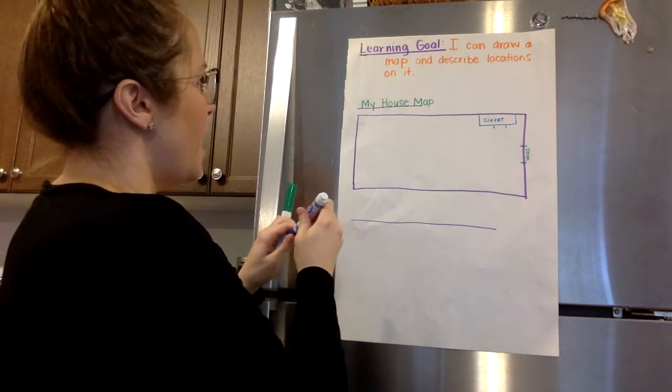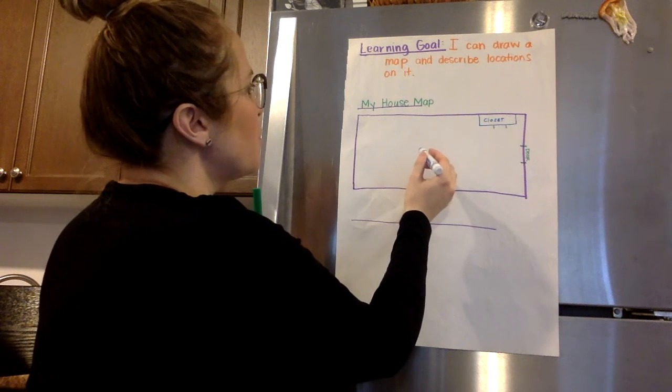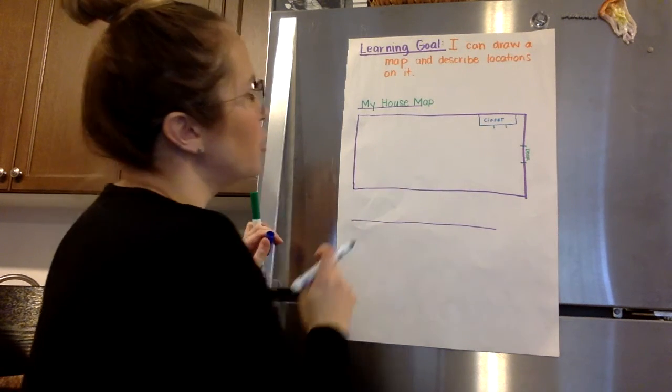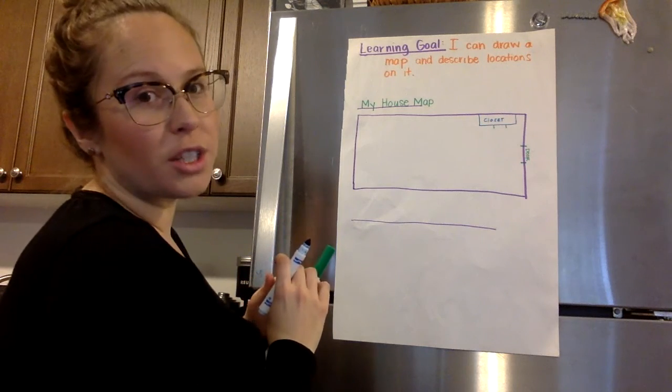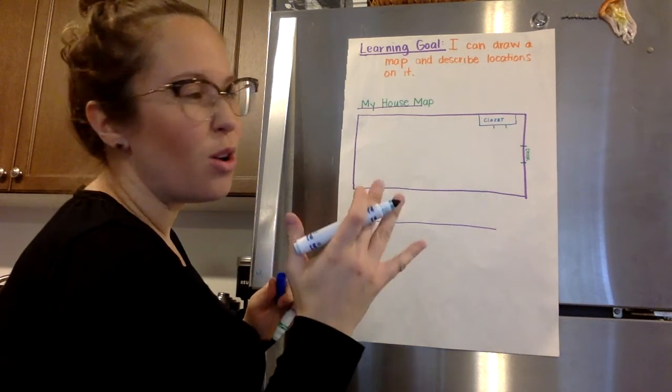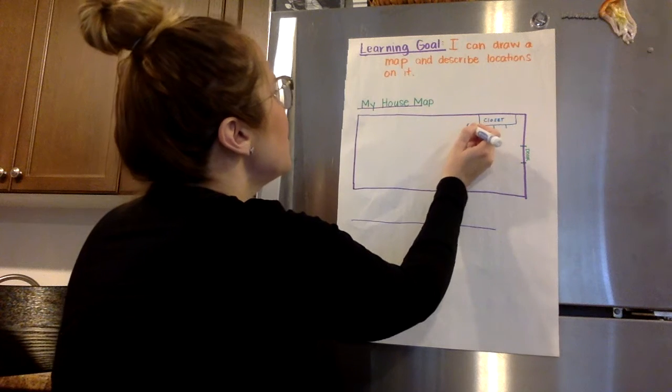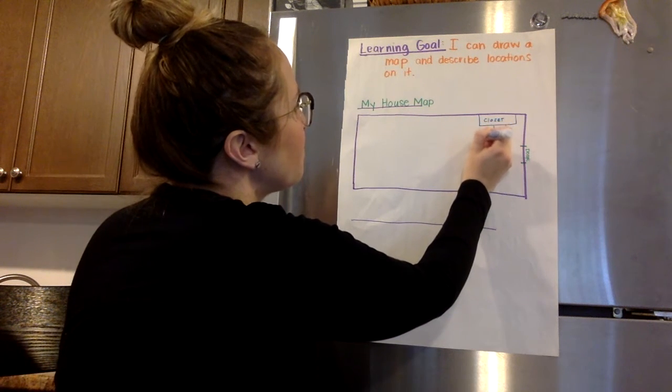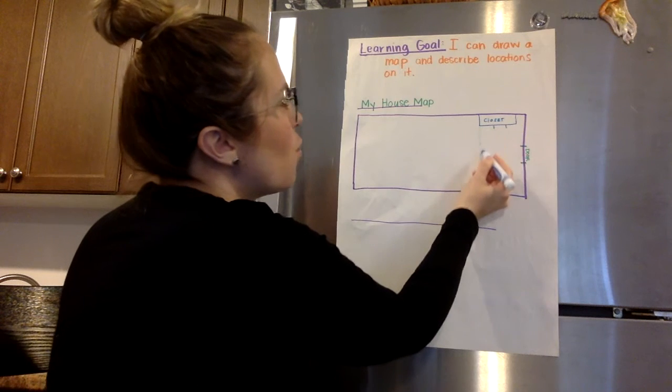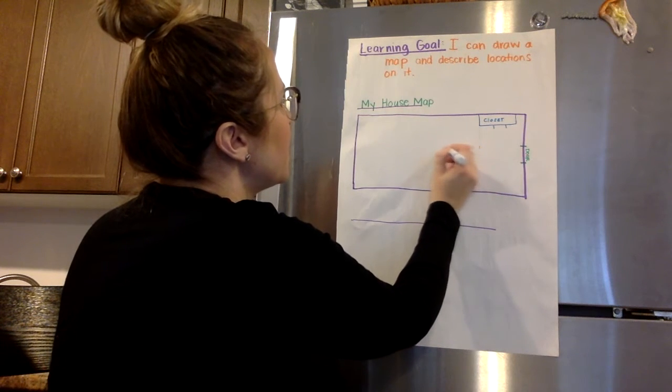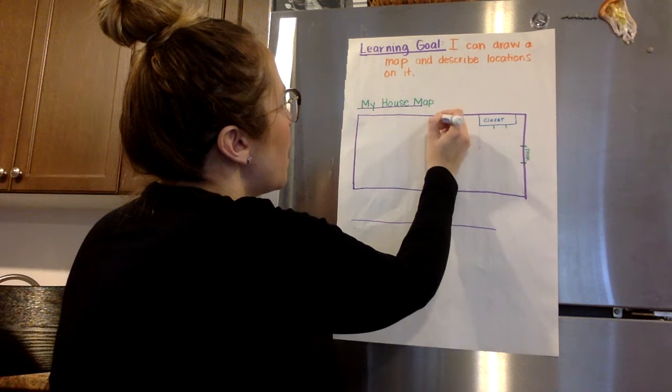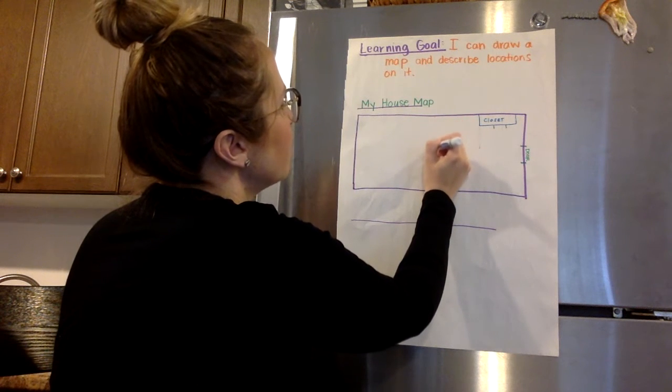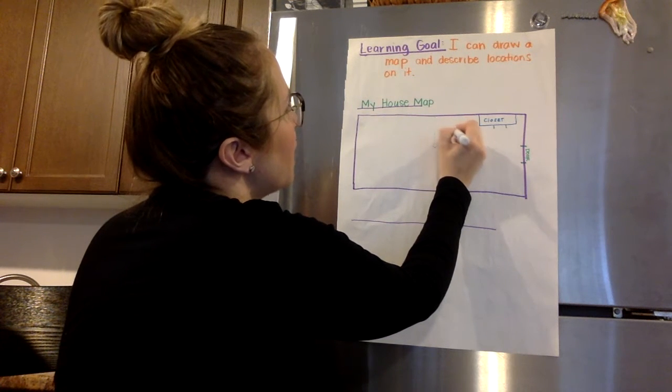And then over here, even though there's no walls, maybe what I'll do is when there's no walls, I'll draw a dotted line. And then you'll know where there's walls and where there's not. So all along here, as you walk in, so there's no wall here, but this is kind of the space for the kitchen. So I'm going to label that kitchen.